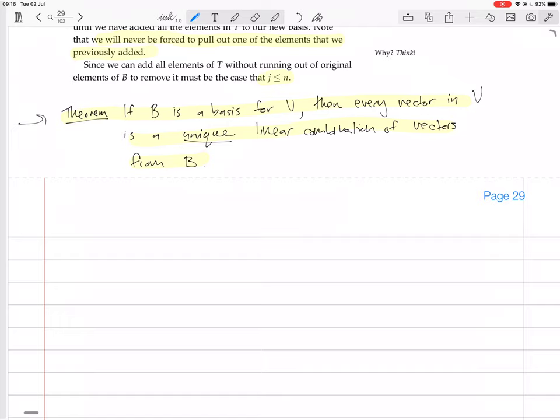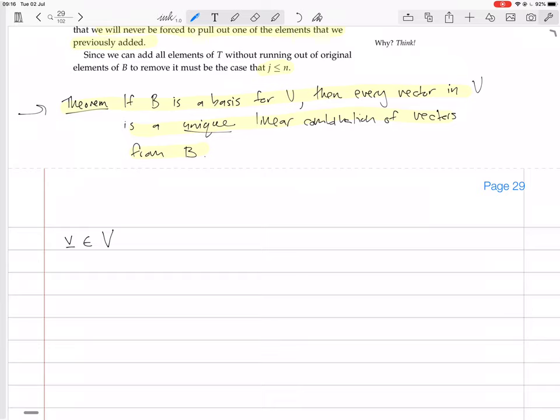The first thing to note is that certainly, since B is a basis - let's take any vector v in the vector space V. Now, since B is a basis, B generates V. So that means v can certainly be expressed as a linear combination of vectors from the basis.